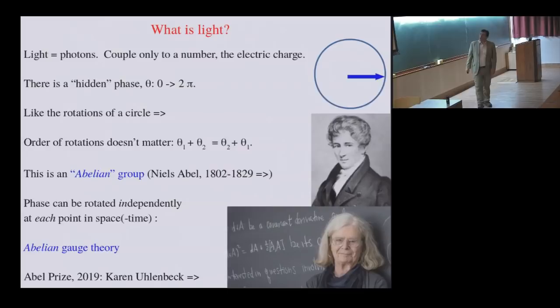Now, an abstract description is that we view in photons, we have a hidden phase. It's an angle that goes from 0 to 2 pi, and it's like the rotations on a circle. And one thing you can say, well, if it's like the rotations of a circle, the order in which I do things doesn't matter. If I rotate by one angle theta 1 and then another theta 2, it's going to be the same if I do it in the opposite order. This is what's known as an abelian group after the Norwegian mathematician Niels Abel, who lived in the beginning of the 1800s. And what is a rabbit that I'm pulling out of a hat is that this phase can be rotated independently at each point in space-time. This is a very profound concept that motivates most of modern high-energy and nuclear physics and also much mathematics, known as an abelian gauge theory.